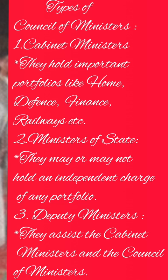The Council of Ministers comprises the Prime Minister and a number of other Ministers appointed by the President on the advice of the Prime Minister. The Constitution 91st Amendment Act in 2003 has put a ceiling — meaning limitation — on the size of the Council of Ministers at the Centre and the States to 15% of the strength of the Lok Sabha and State Legislatures. In the case of smaller states, the maximum number of Ministers allowed is 12.